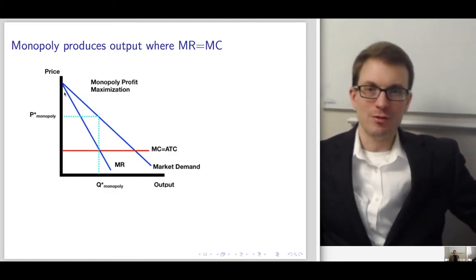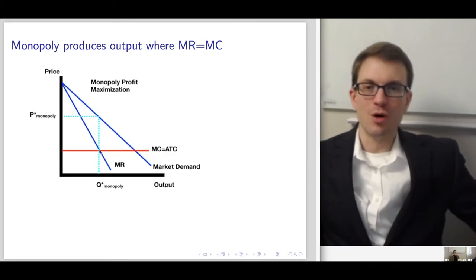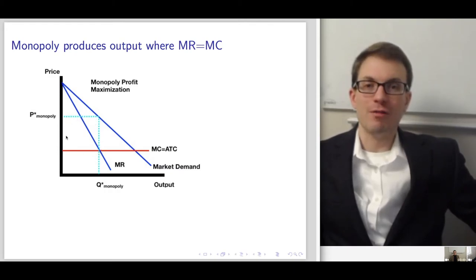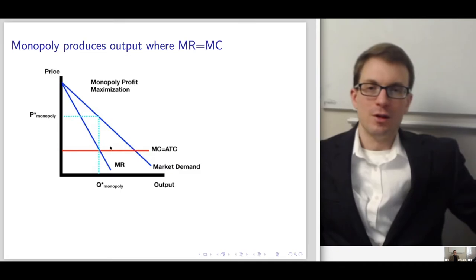The steps for finding the monopoly's outcome from the graph: find where marginal revenue equals marginal cost to get the quantity; then go up to the demand curve to find the associated monopoly price. The box corresponding to price minus average total cost times quantity is profits — producer surplus. Under the demand curve and above the actual price is consumer surplus. And the triangle beyond the monopoly's quantity is going to be deadweight loss.